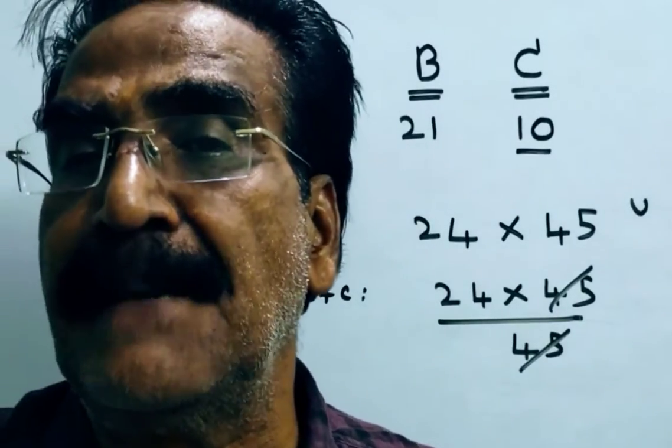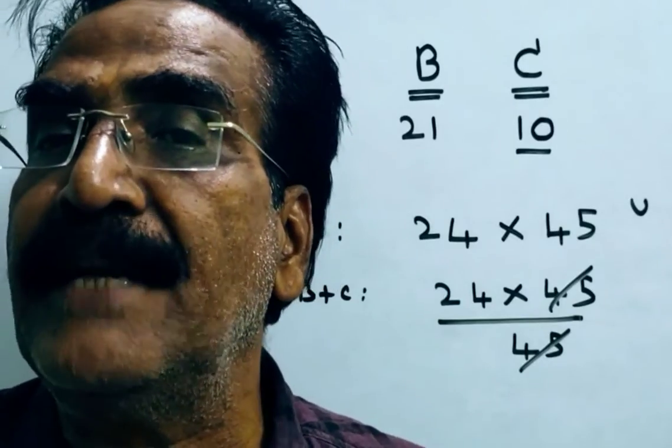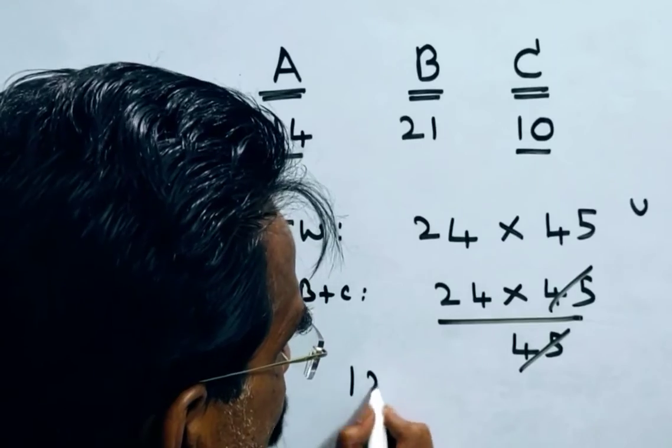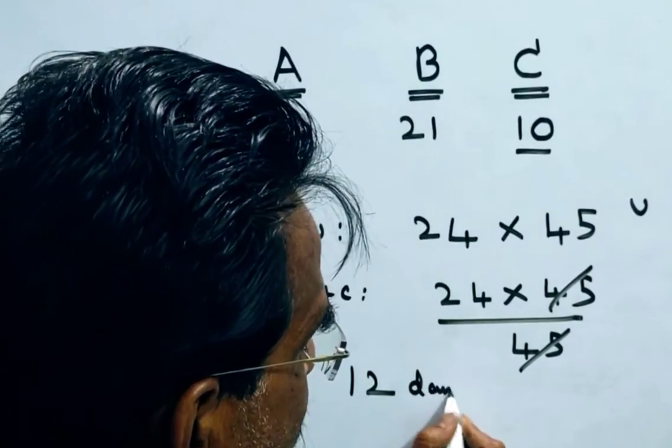Now, the question is, in how many days A plus B plus C can complete 50% of the work? So, 12 days friends, 12 days is your answer.